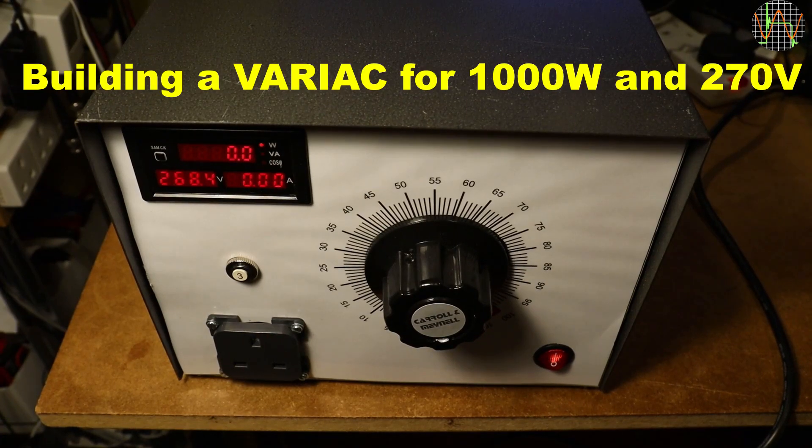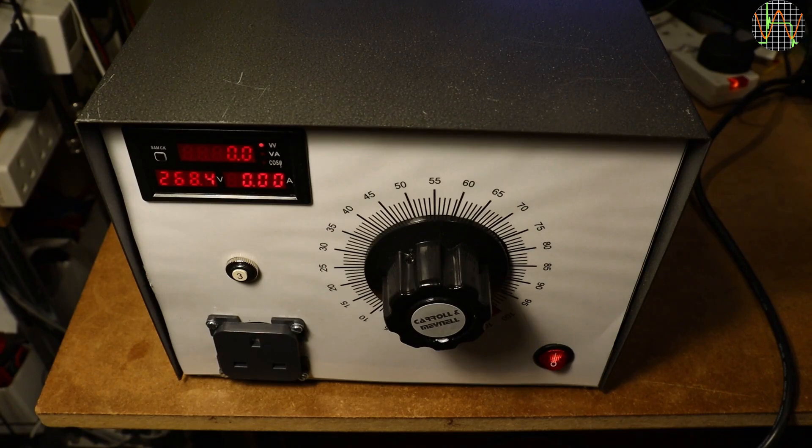Hi there, in this video I want to talk about building a VARIAC for my lab, which is that big unit you see there. It weighs 13.7 kilos, truly the heaviest piece of equipment I have ever put together.